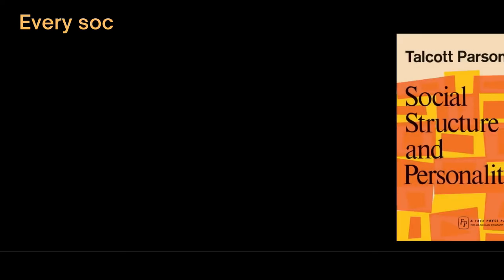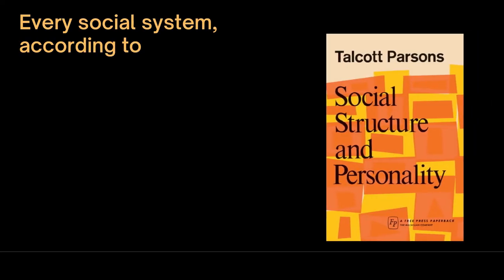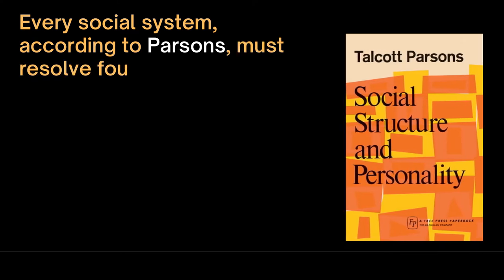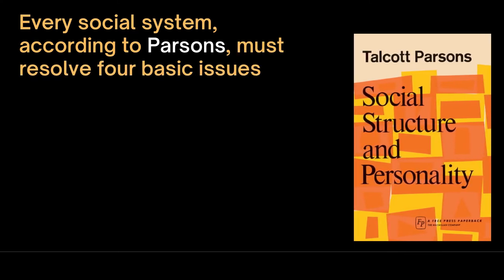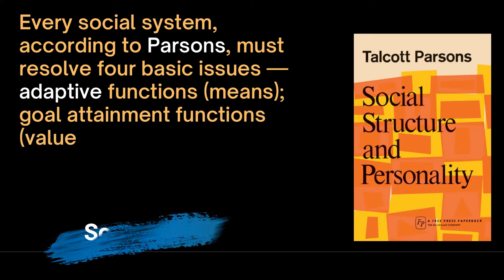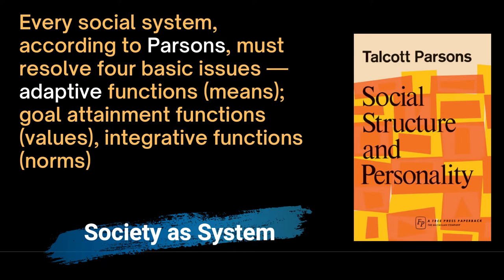Every social system, according to Talcott Parsons, must resolve four basic issues: adaptive functions, which are the means; goal attainment functions, which are the values of society; integrative functions, which are the norms; and latent tension management functions.